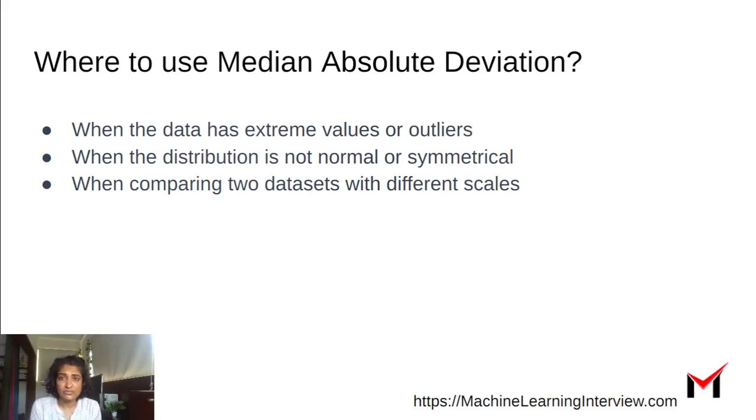So where to use median absolute deviation? When your data has extreme values or outliers is one case that you saw. When the distribution is not normal or symmetrical, for instance, if you have a skewed distribution or typically a heavy-tailed distribution, the mean absolute deviation or the standard deviation might not do full justice sometimes.